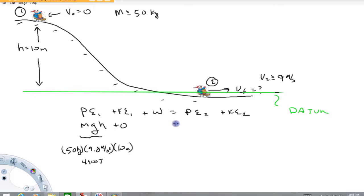Now if you don't mind, I'm going to skip along here and talk about the PE2 and KE2 term. So at the bottom of the hill here, again the child's at the datum, which means the potential energy would be zero. And then the kinetic energy would be one-half MV squared.